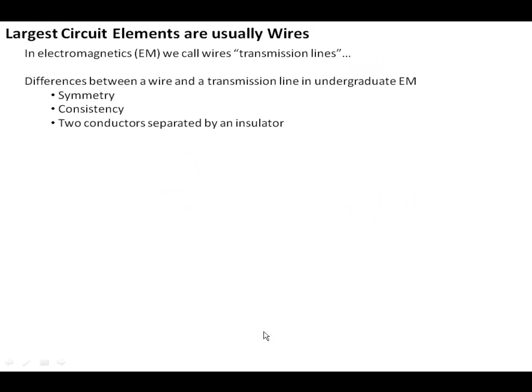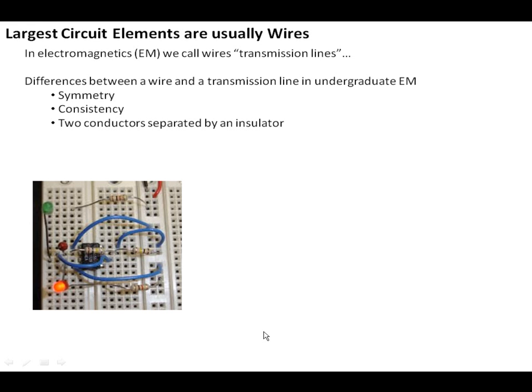It turns out that the largest circuit elements you work with typically are wires. In electromagnetics, we call these transmission lines instead of wires. There's a difference between a wire and a transmission line. A wire can bend everywhere and connects point A to point B. But when we use the word transmission line, we're talking about some kind of conducting structure that has symmetry and consistency along its length. You have two conductors separated by an insulator.